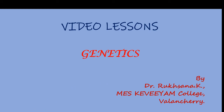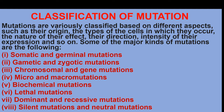Hi students, we are going to learn the classifications of mutations. Mutations are variously classified based on different aspects such as their origin, the type of cells in which they occur, the nature of their effect, their direction, and the intensity of their expression.